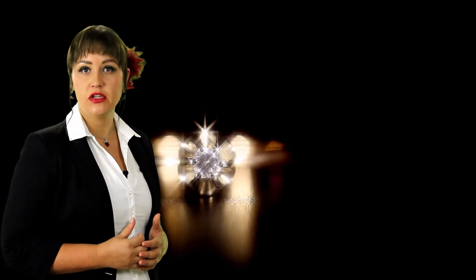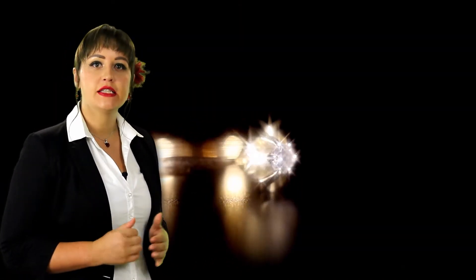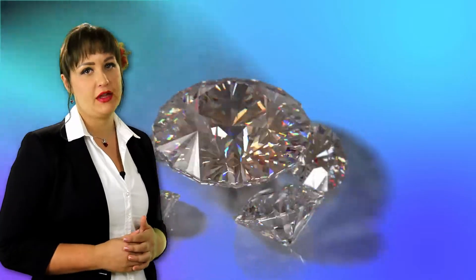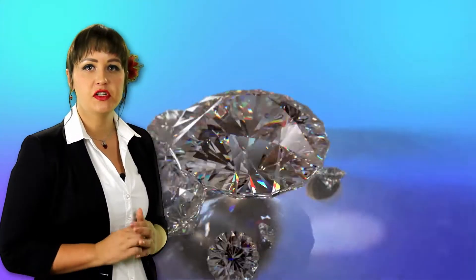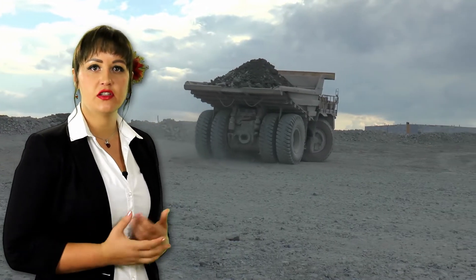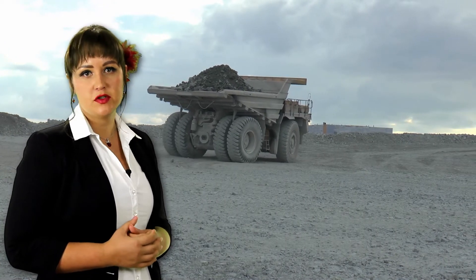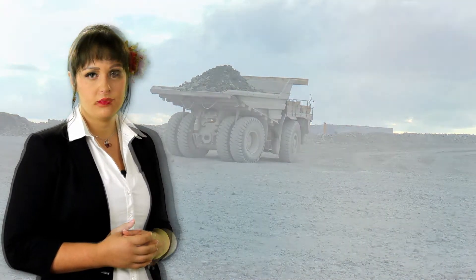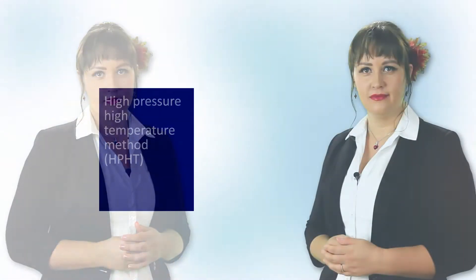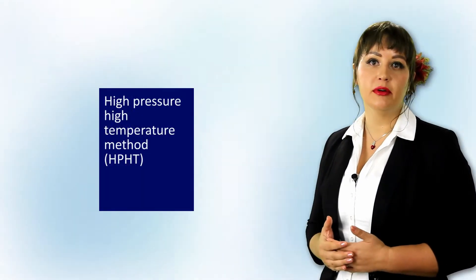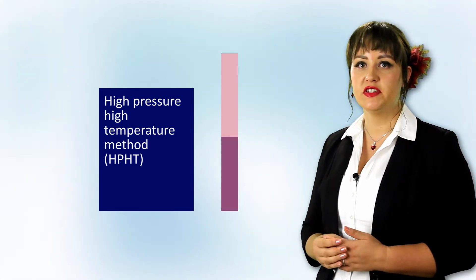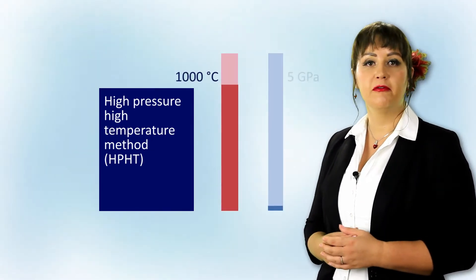The synthetic gemstone industry on an industrial scale started in the 1950s and is currently expanding. Some consumers still prefer mined gemstones, but there is a shift in consumer preferences, especially because of the many problems with gemstone mining that came to light recently. One of the methods used for growing diamonds in the laboratory is the high-pressure, high-temperature method, also known as HPHT. In this method, carbon is subjected to high temperature — over 1,000 degrees Celsius — and pressure of about 5 GPa.